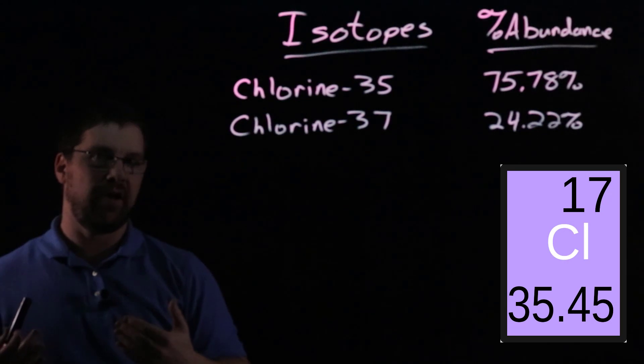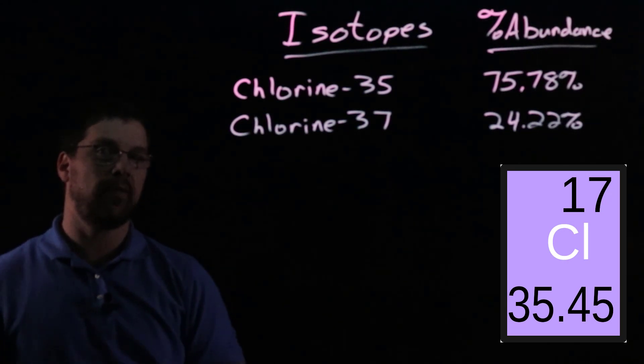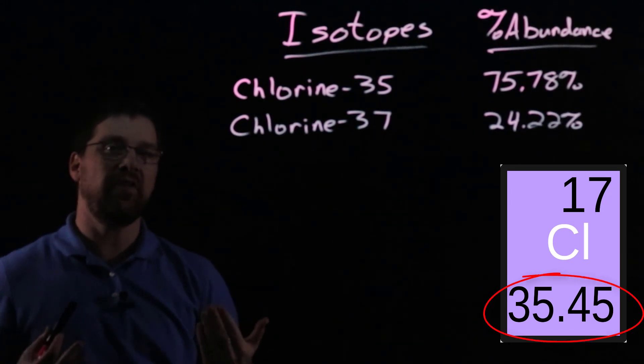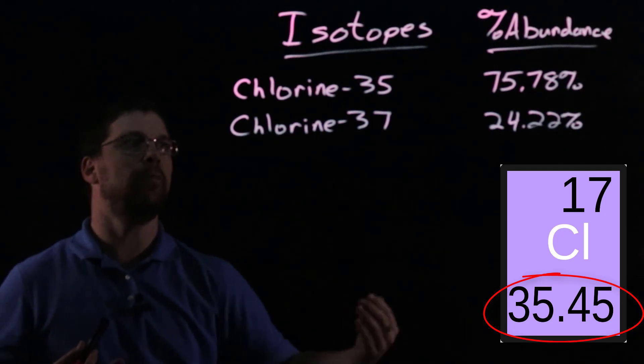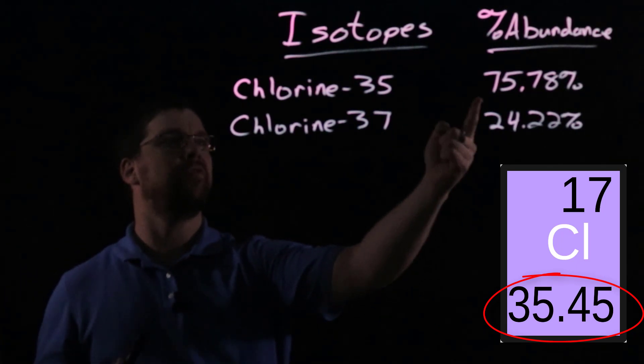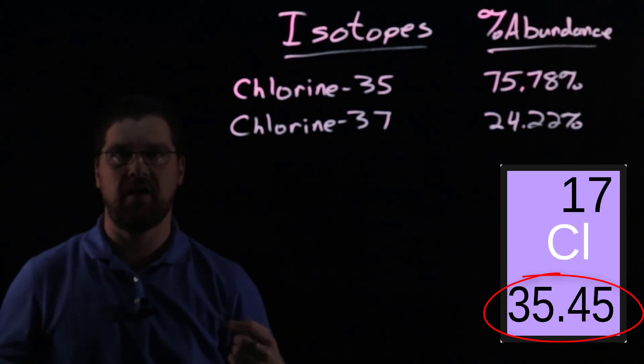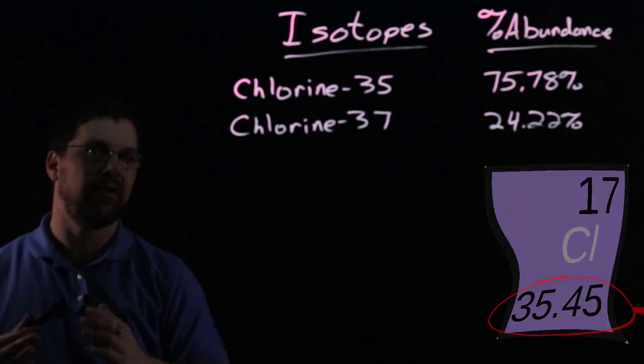Because there are more chlorine-35 atoms than there are chlorine-37 atoms. So when we look at the periodic table and see that the average atomic mass is listed as 35.45, hopefully that should make sense to us because the majority of the chlorine atoms do have a mass of 35. So it makes sense that the average mass would be closer to that number.